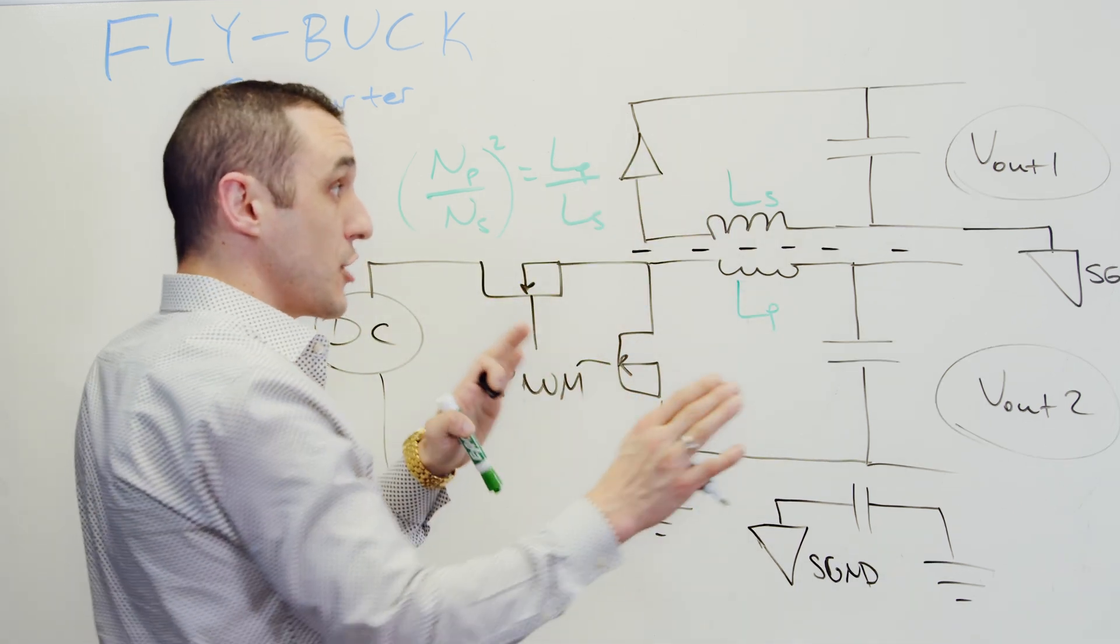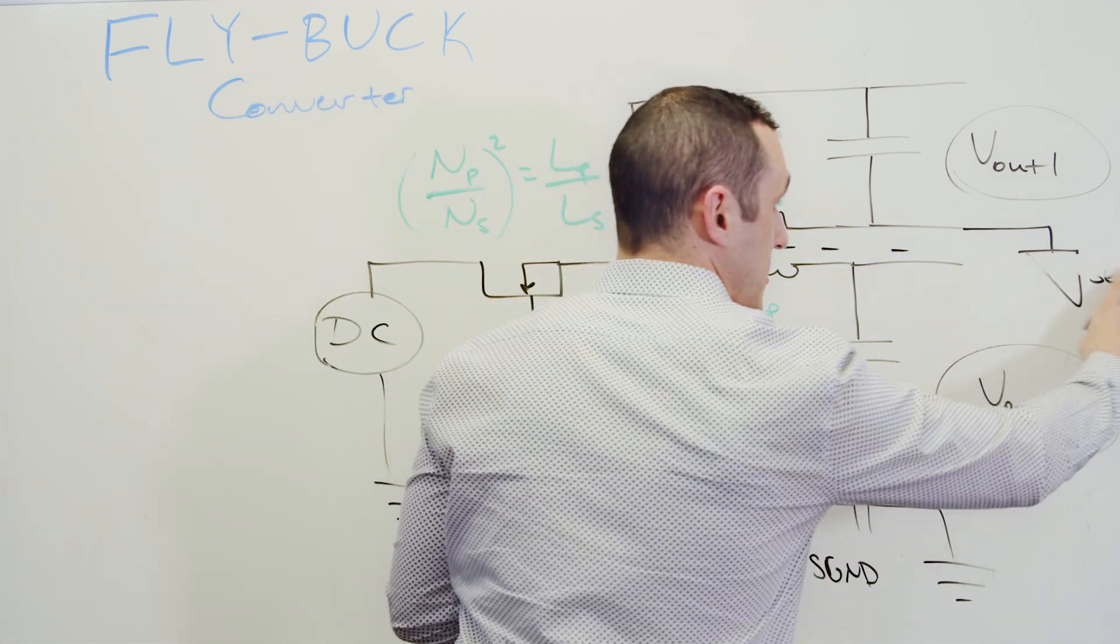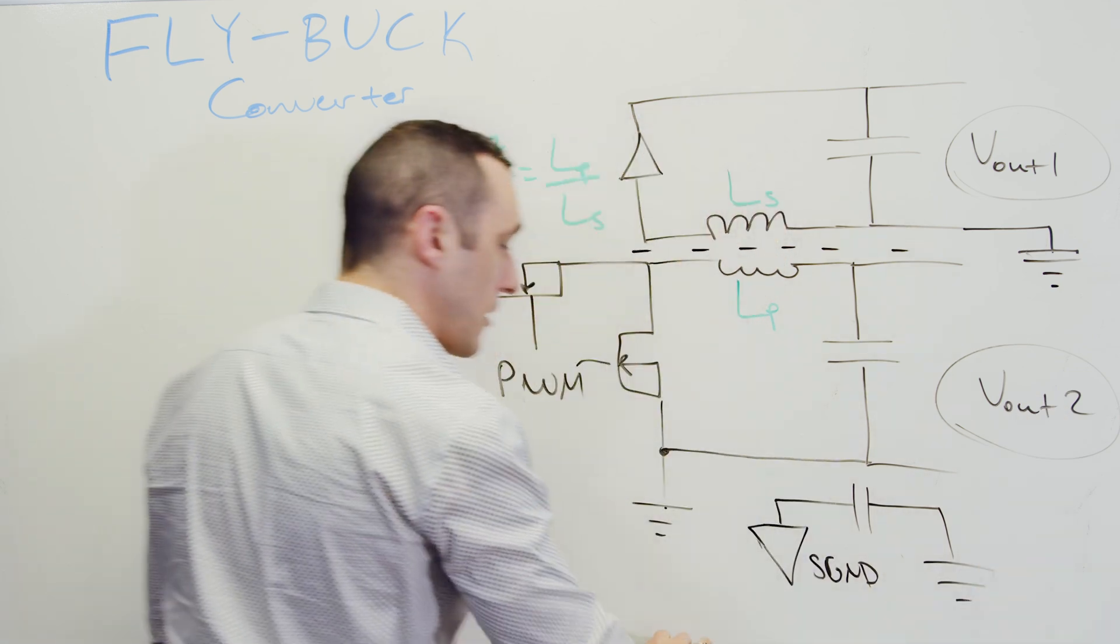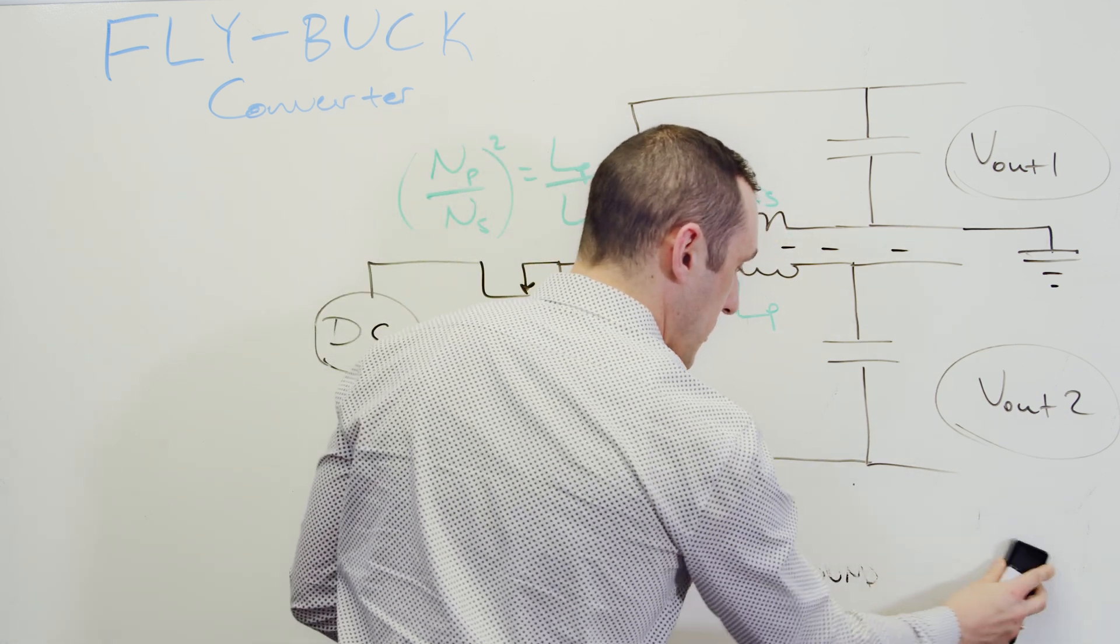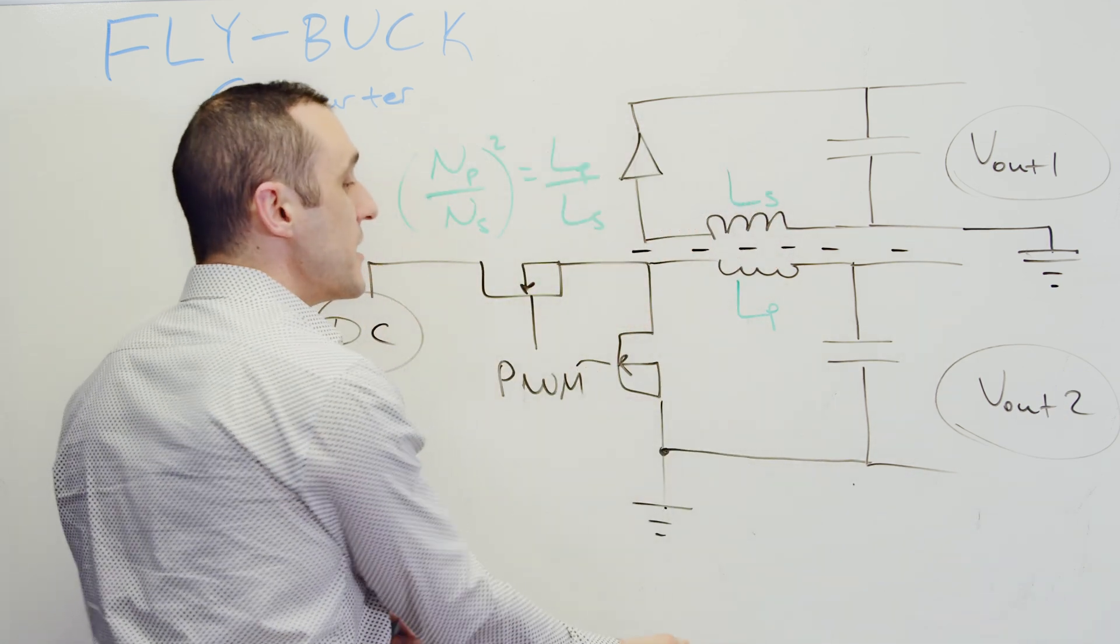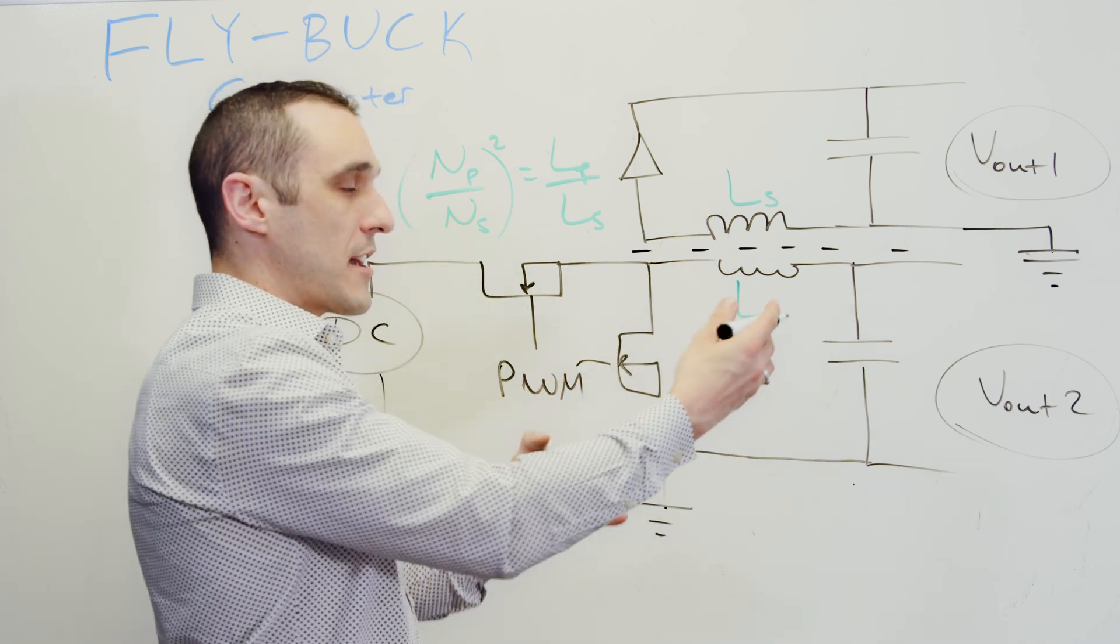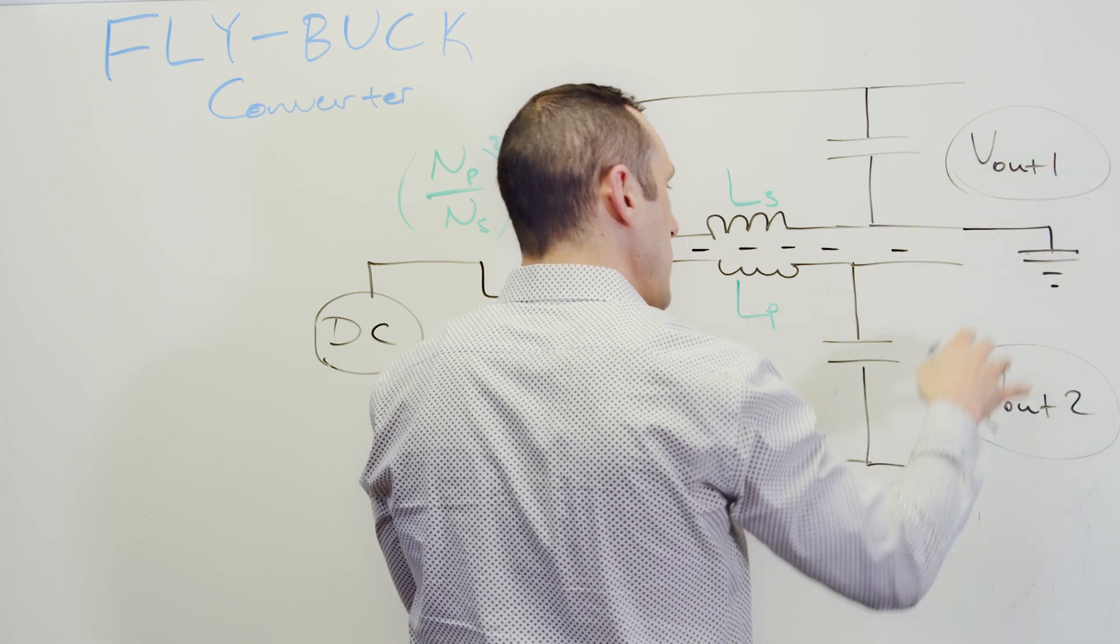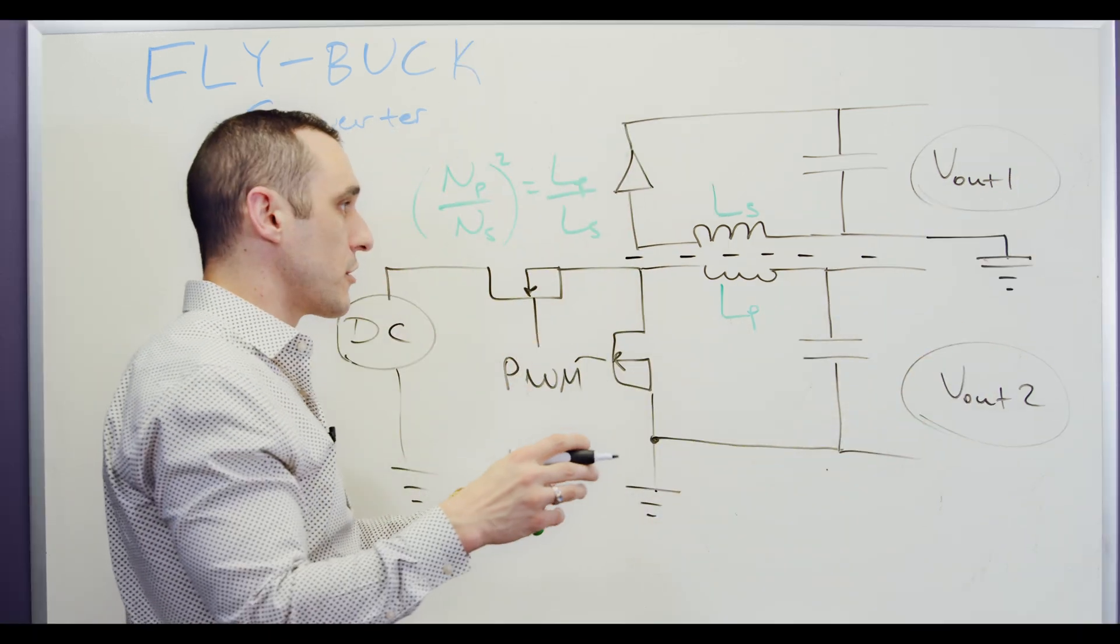But you would generally set up the system like this if you wanted to have galvanic isolation between this ground and this portion of the system. Now you don't have to do this. I could theoretically just have a single ground on this side as well. And then I wouldn't have this portion in my system either. So in this case, I would lose that galvanic isolation.